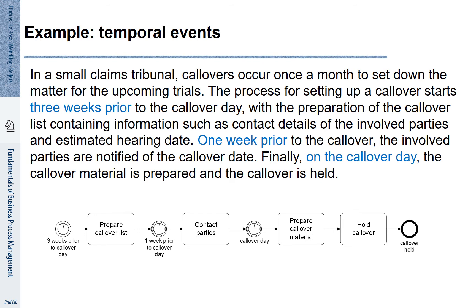In a small claims tribunal, call-overs occur once a month to set down the matter for upcoming trials. The process for setting up a call-over starts three weeks prior to the call-over day, with the preparation of the call-over list containing information such as contact details of the involved parties and estimated hearing date. One week prior to the call-over, the involved parties are notified of the call-over date. Finally, on the call-over date, the call-over material is prepared and the call-over is held.